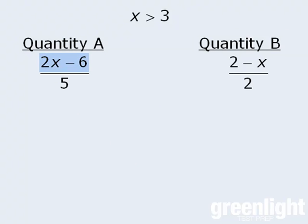First notice that in the numerator of quantity A, we have 2x minus 6. Now since we're told that x is greater than 3, we know that 2 times x must be greater than 6. And if 2 times x is greater than 6, then it must be the case that 2x minus 6 is a positive number. As you'll soon see, we don't need to be any more precise than this.